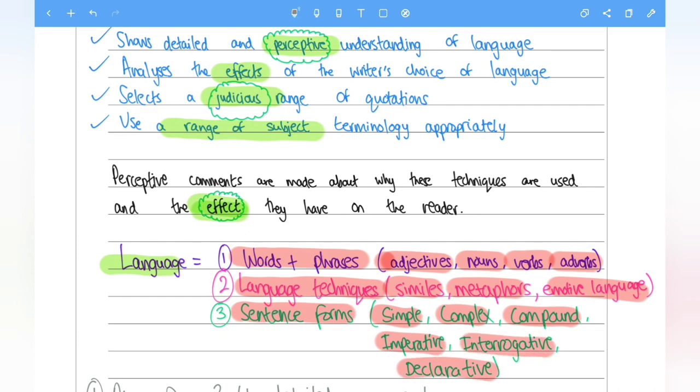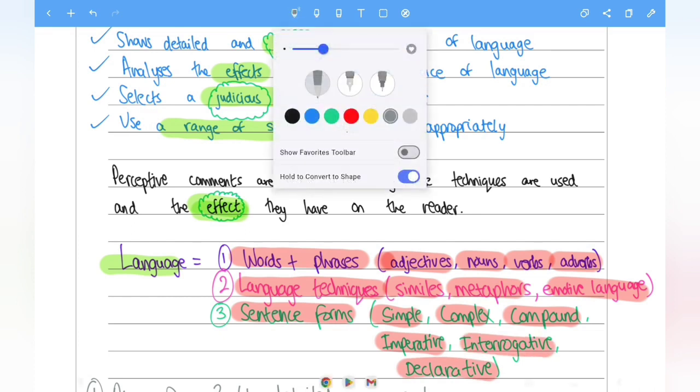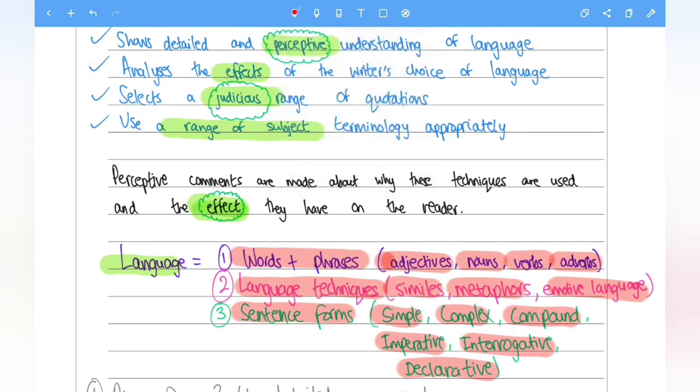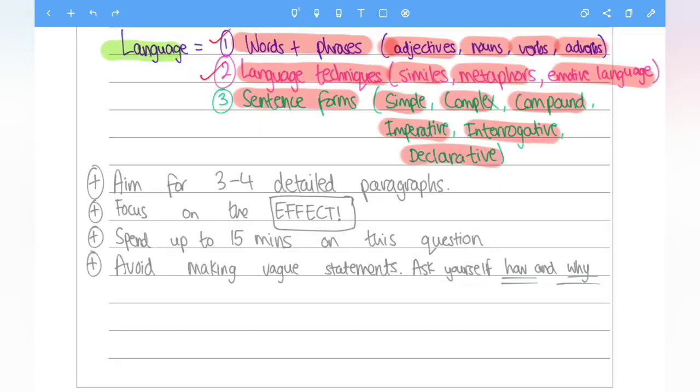But I need to stress and emphasise that the first two are significant because they hold a high weighting. So number one and number two. If you do not find anything to do with sentence forms, it's not the end of the world. You can still get full marks, but often you will find something to do with sentence forms.